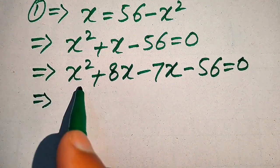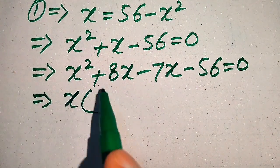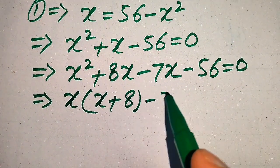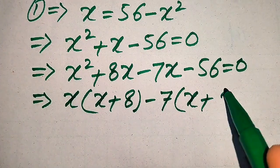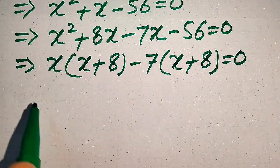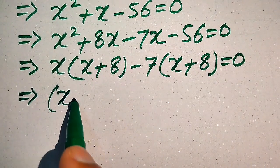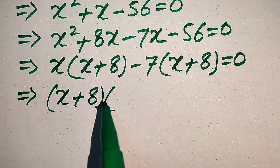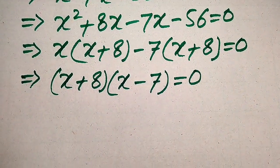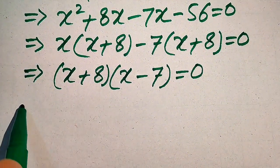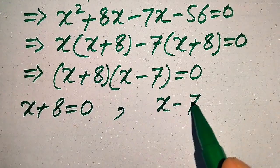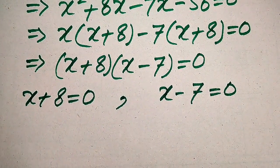We take x common from the first two terms to get x(x plus 8), and take negative 7 common from the last two terms to get minus 7(x plus 8) equals 0. Then we take (x plus 8) common from both terms, giving us (x plus 8)(x minus 7) equals 0. The two cases are: x plus 8 equals 0, and x minus 7 equals 0.